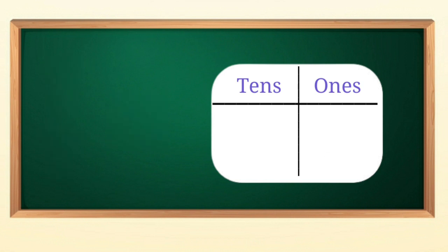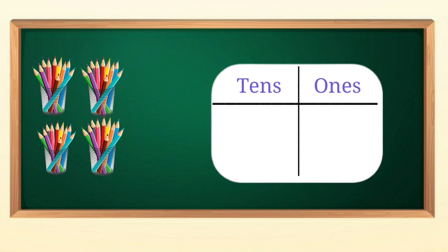Now children, look, we have four tens color pencils in glasses and four pencils outside the glass. It means four tens and four ones, forty-four.